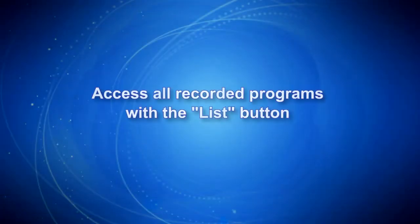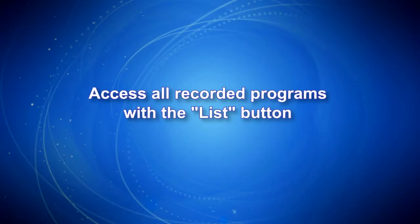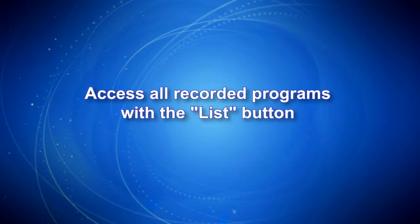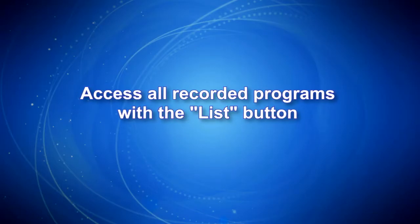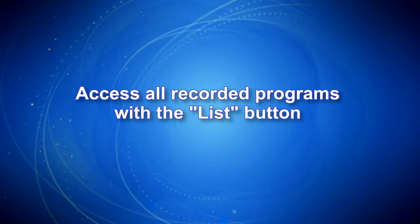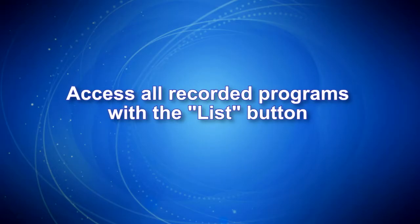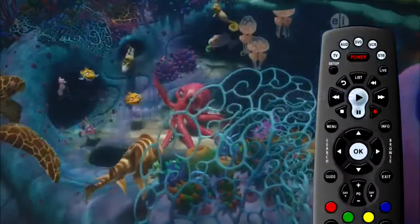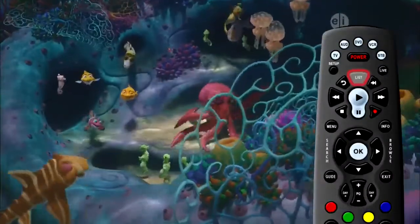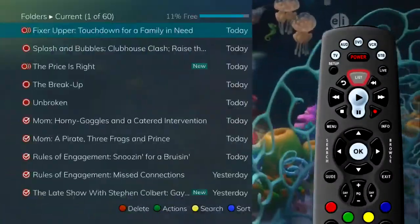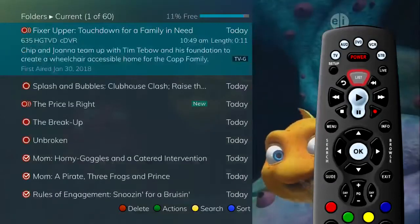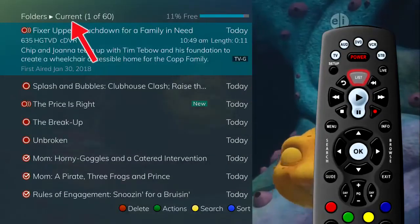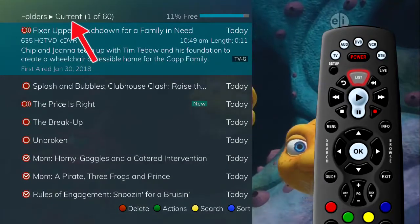With your service, it is simple to access all of your recorded programs from a single button on the remote control — the list button. Press the list button once on the remote control to access the list of current recordings.